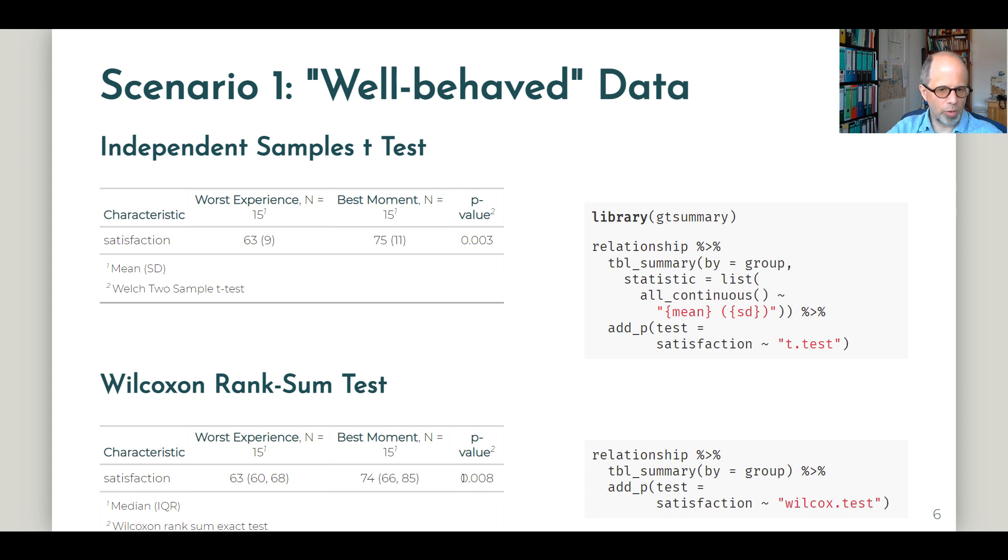But we get to the same conclusion. The p-value is a little bit different than in the case of the t-test, but it's still clearly significant. So here we can also conclude that the group that was made to think of the best moment is significantly more satisfied with their relationship than the group that was made to think of their worst experience. This is something we often find in practice. When your data are not problematic in any sense, so fairly normally distributed, these tests very often come to the same conclusion.